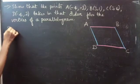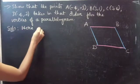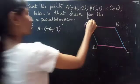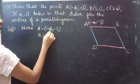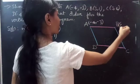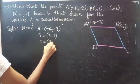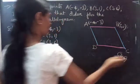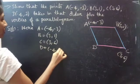Solution. Here, A equals minus 4 comma minus 3, B equals 3 comma 1, C equals 3 comma 6, D equals minus 4 comma 2.